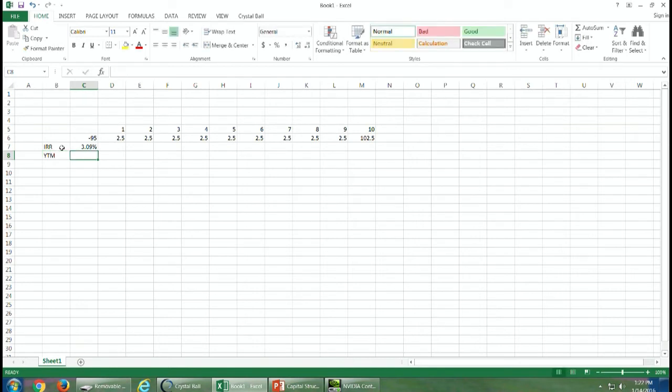To get the yield to maturity, we just take that times 2, and we wind up with this as the yield to maturity. So we have 6.81% as the yield to maturity.